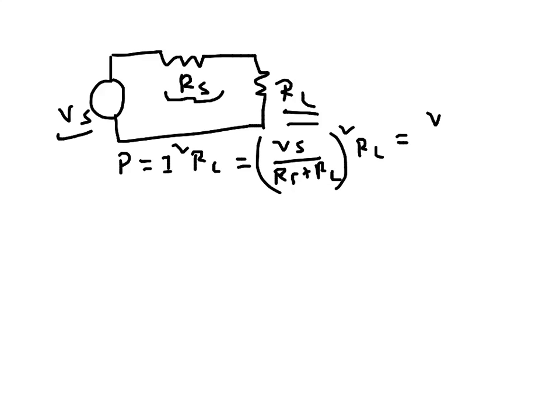So that is Vs squared over RS squared plus 2 RS RL plus RL squared times RL here.